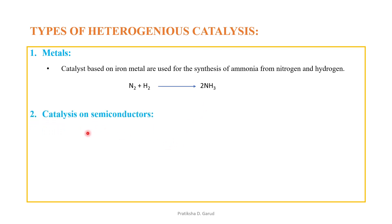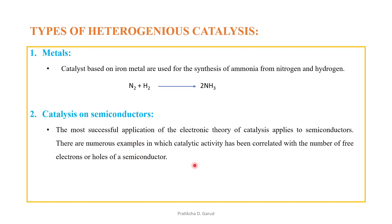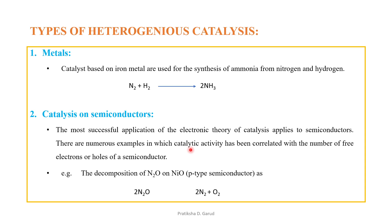The second type is catalysis on semiconductors. The most successful application of the electronic theory of catalysis applies to semiconductors. Catalytic activity has been correlated with the number of free electrons or holes of a semiconductor. For example, the decomposition of N₂O on nickel oxide (a p-type semiconductor): 2 N₂O → N₂ + O₂.